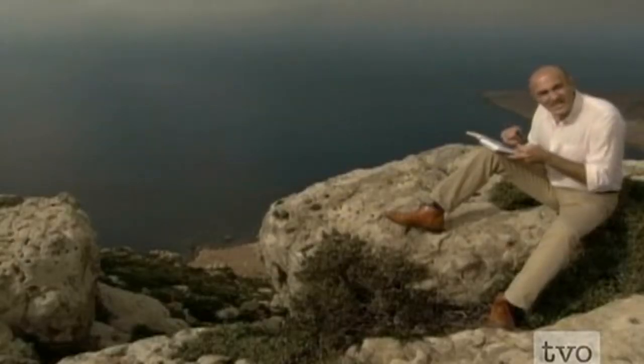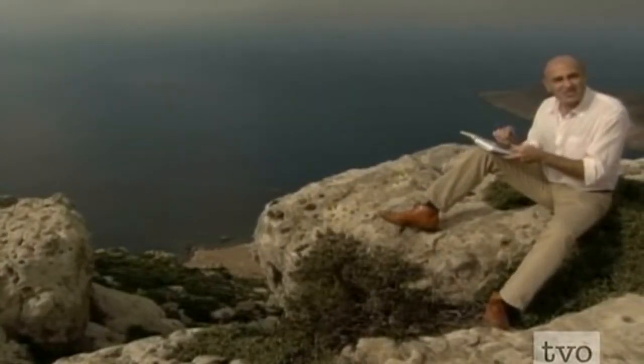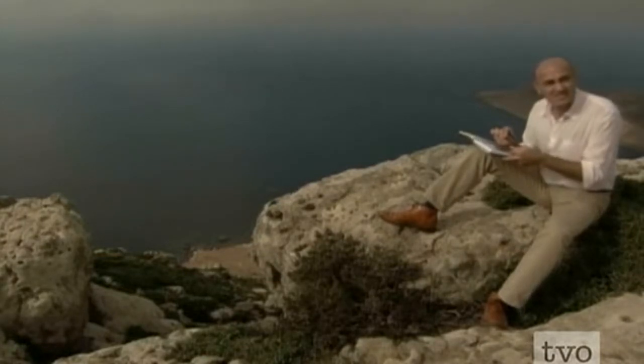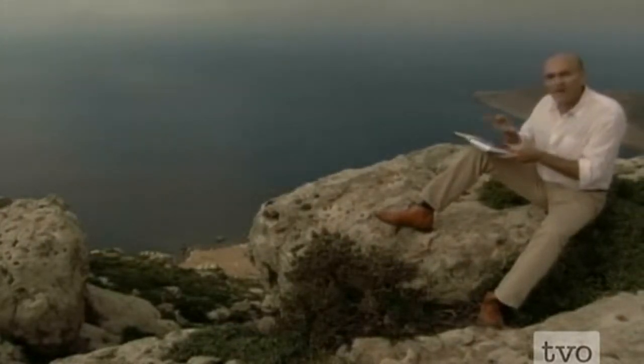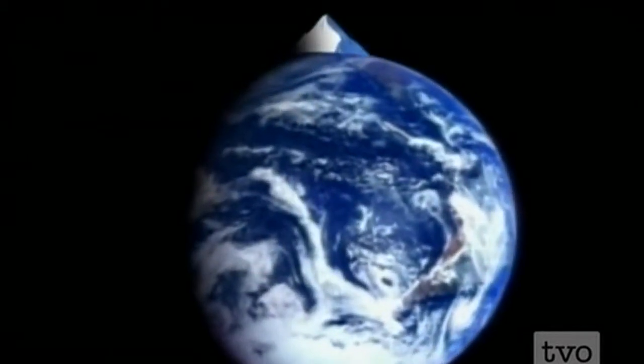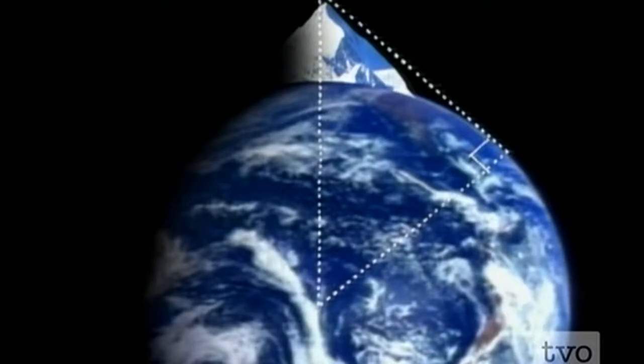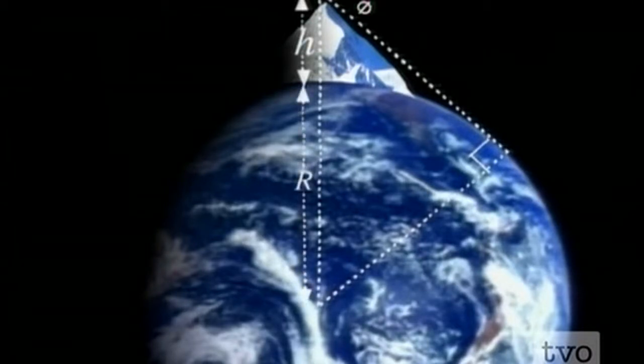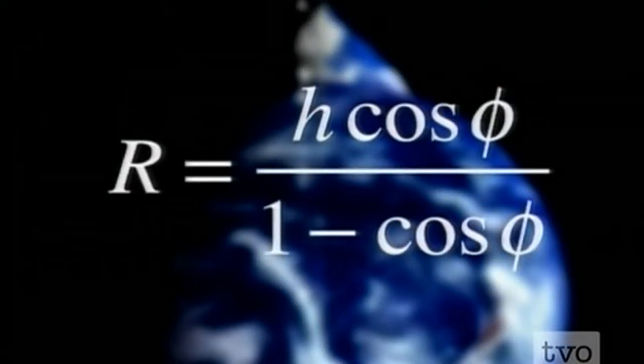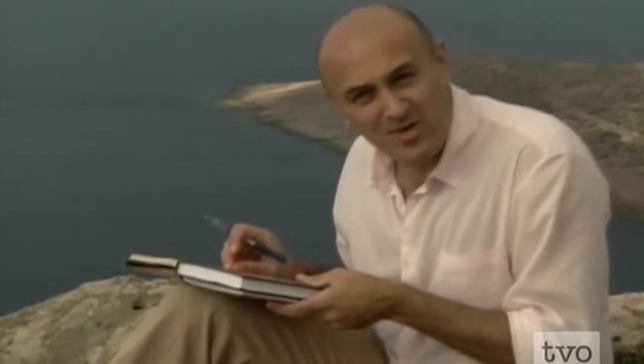Now here's the really ingenious part. Al-Biruni had measured four quantities: three angles and a distance. He used two of the angles and the distance to work out the height of the mountain. Al-Biruni then imagined a huge right-angled triangle with three corners: the mountaintop, the horizon, and the center of the earth. Trigonometry told him that the angle he had measured and the height of the mountain are related to the radius of the earth, and algebra allowed him to calculate it.